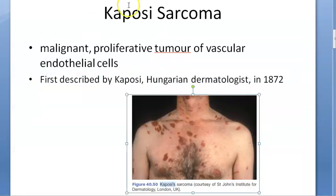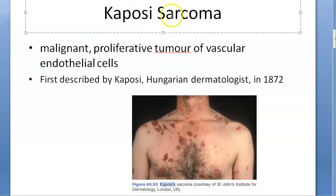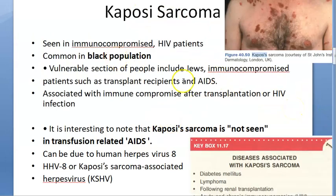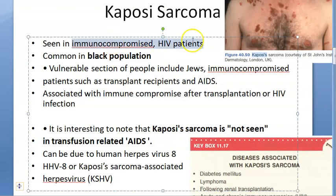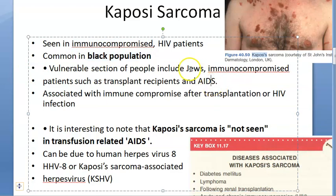Some people call it Kaposi's angiosarcoma because it is vascular. Where do you see it? In HIV patients and other immunocompromised people — like diabetics or people who have had an organ transplant. It's also common in Black populations, and some sources mention it in Ashkenazi Jews. So: immunocompromised individuals, transplant recipients, and AIDS patients.